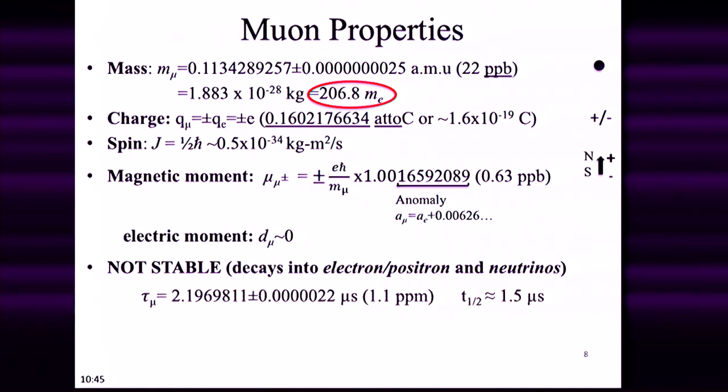And when it decays, it decays into lighter particles, the electron for the negative muon, the positron for the positive muon. And because it's a weak interaction, there are associated neutrinos. And there's a lifetime of the muon, 2.2 microseconds. And that's very measurable.